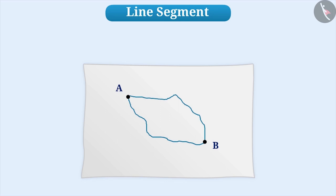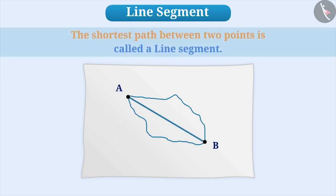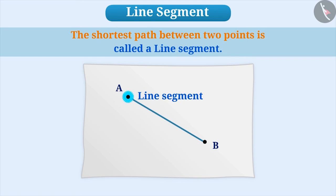But if we observe, we get the shortest path when both points are joined without any turn. The shortest path between any two points is called a line segment. Each line segment has two endpoints based on which we give the name to that line segment.